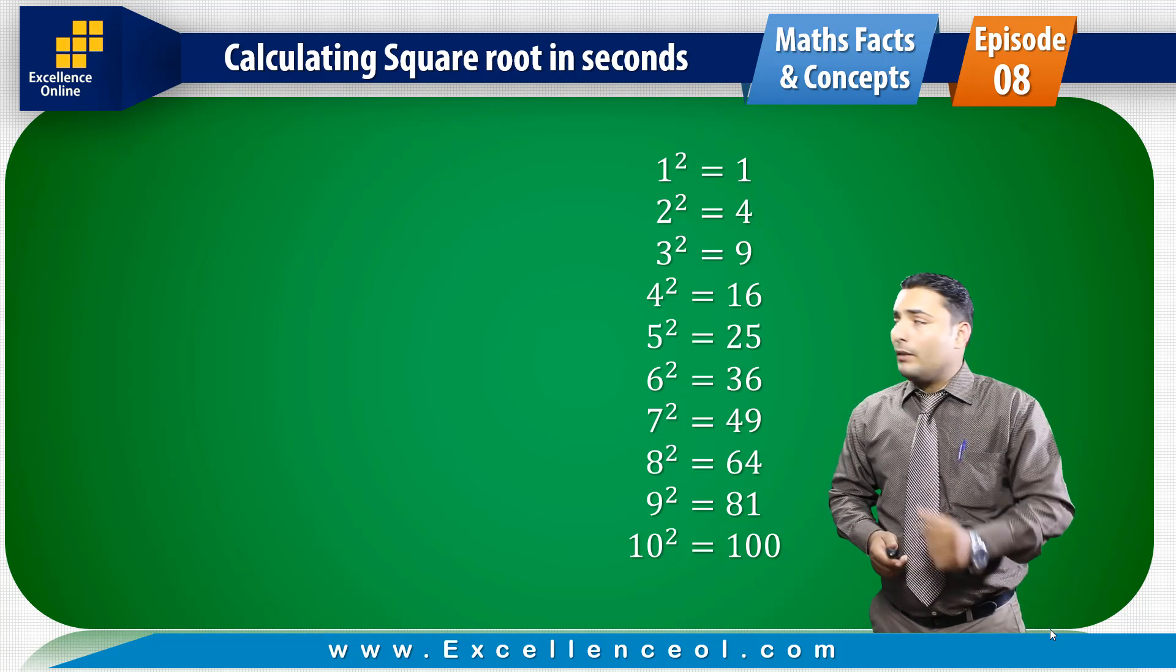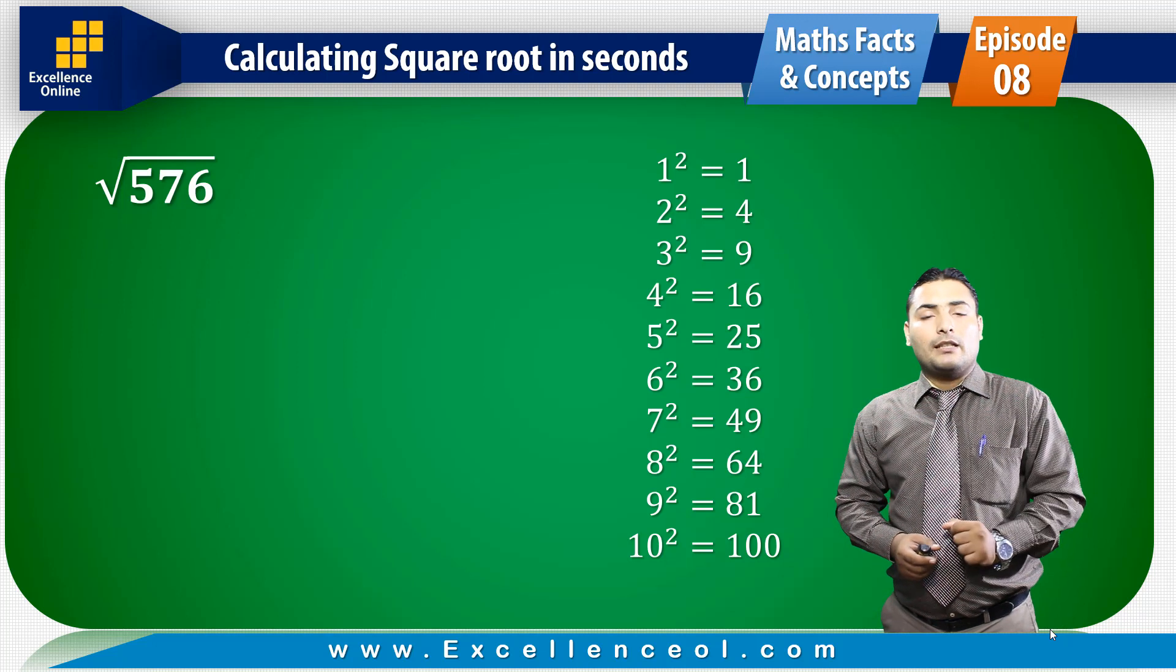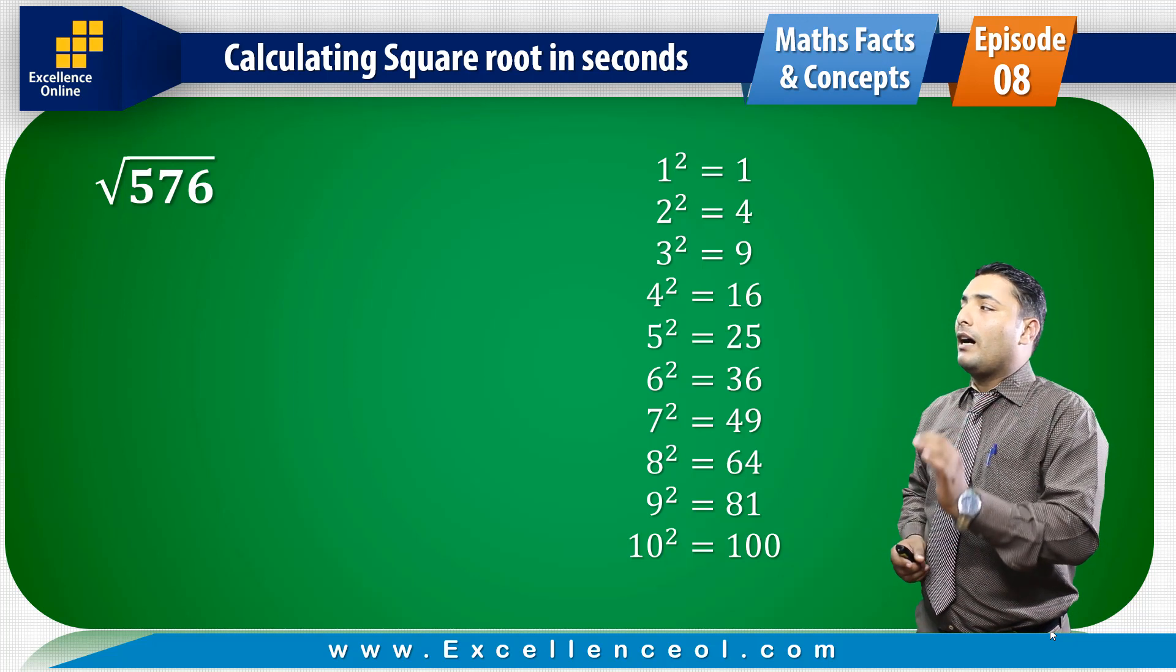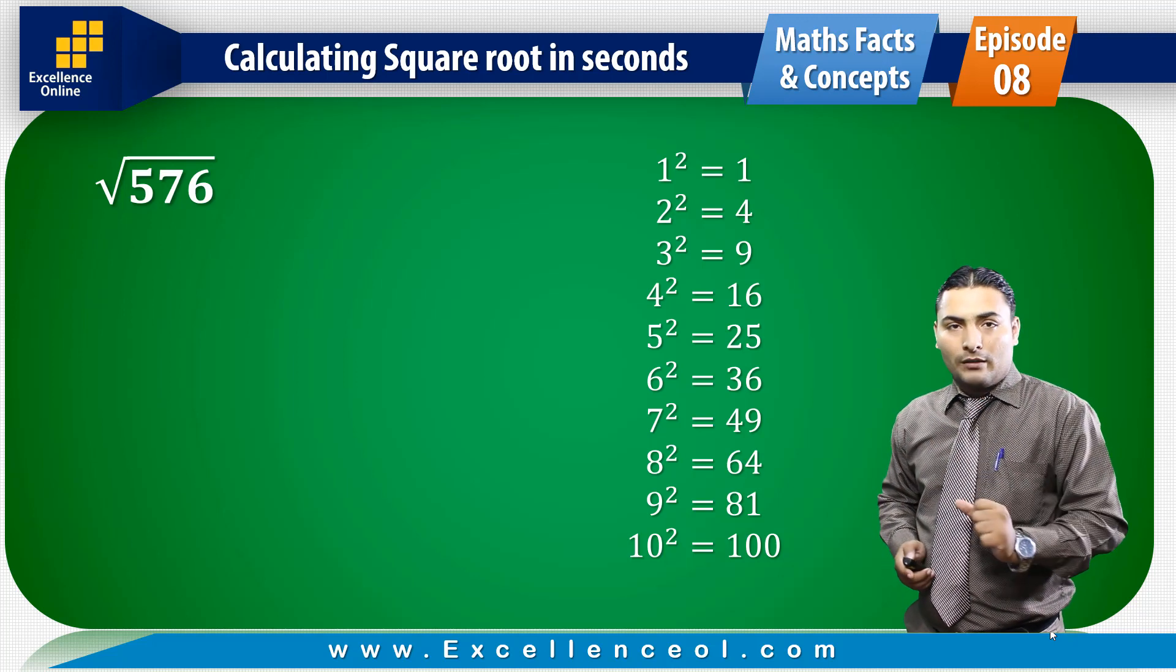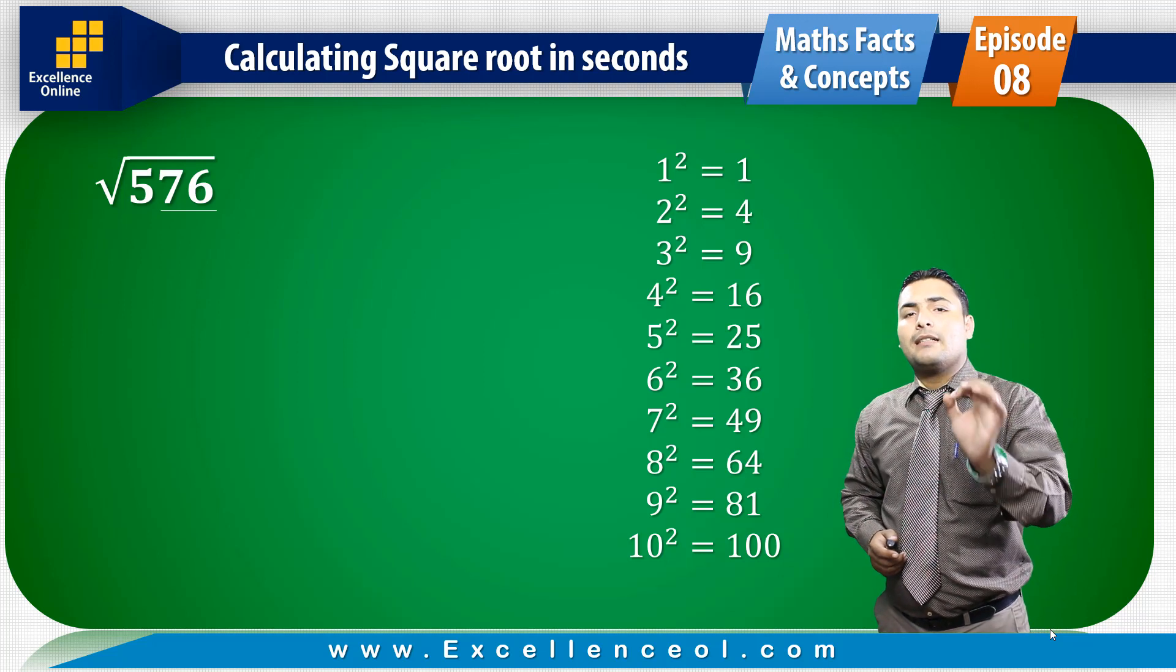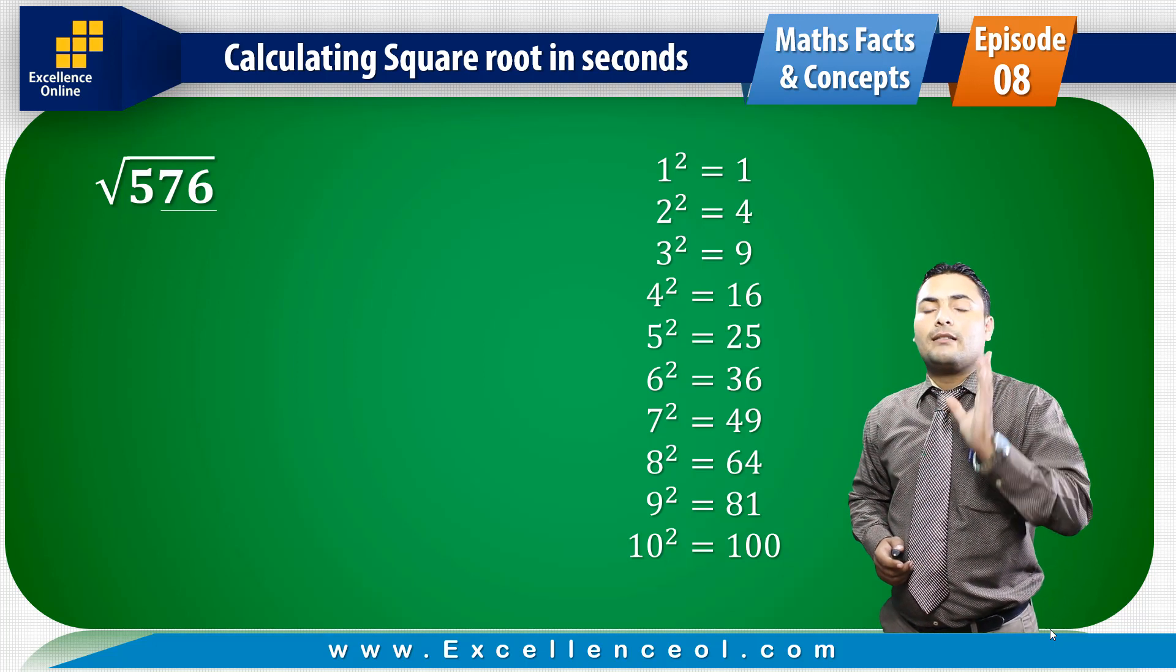Suppose, for example, I have a number called 576. To find the square root, the last number will be a pair, which is 76. The last digit is 6. I have to see that 6 is the last digit.